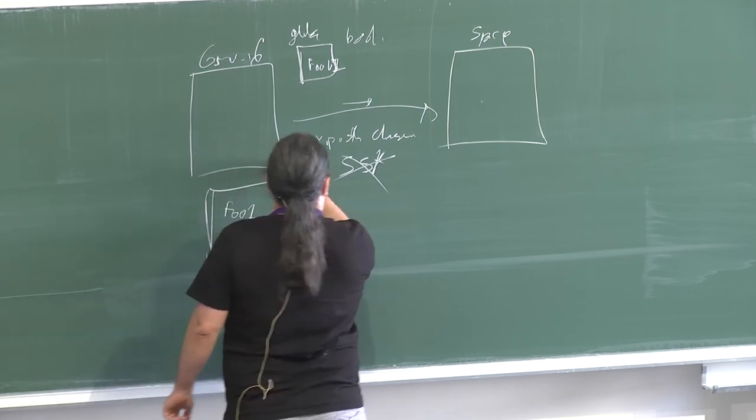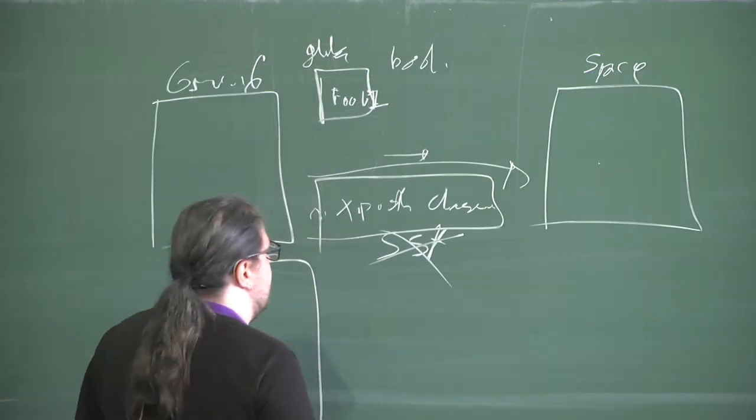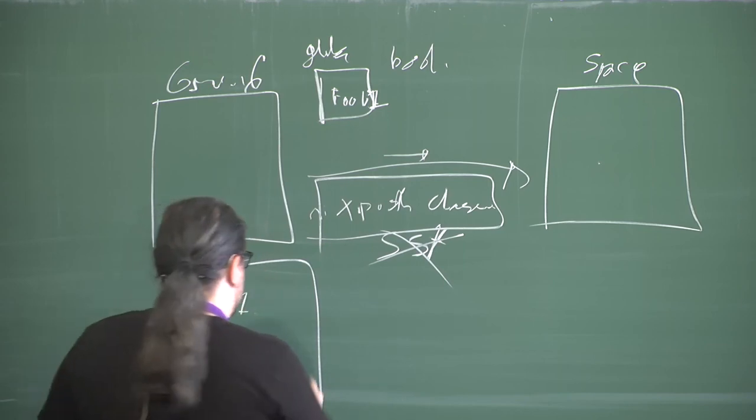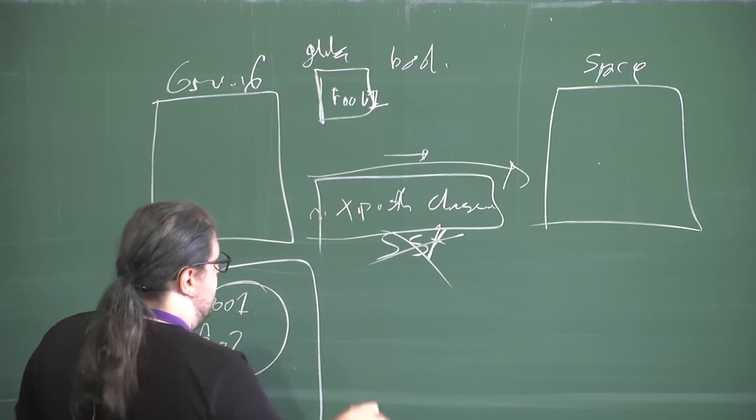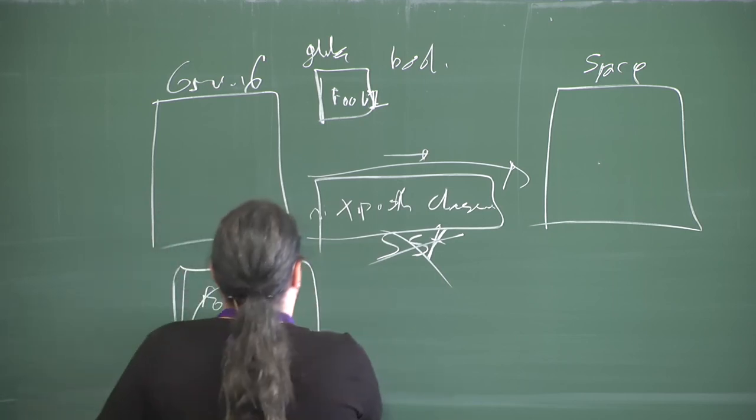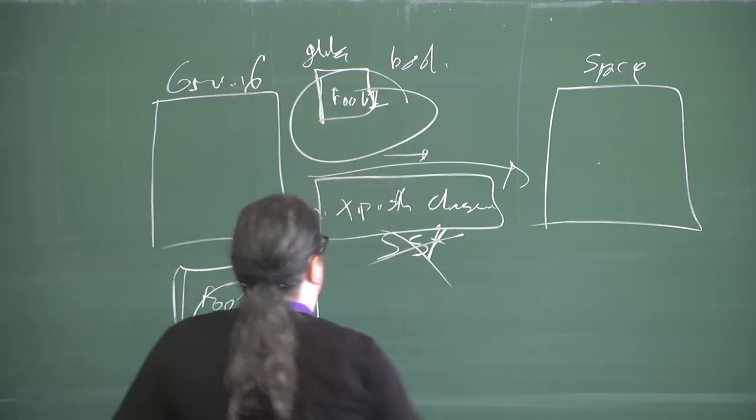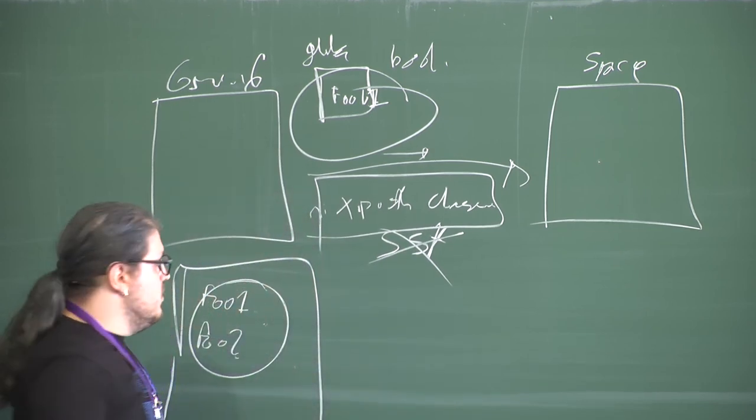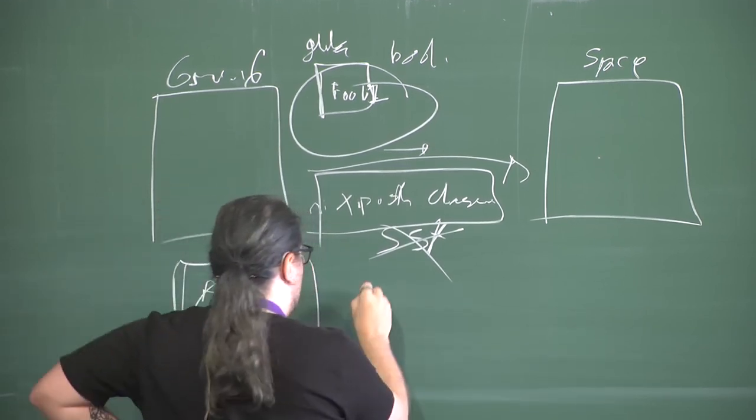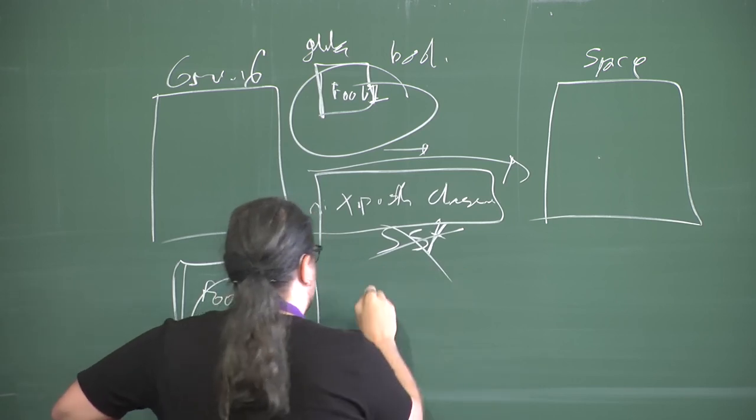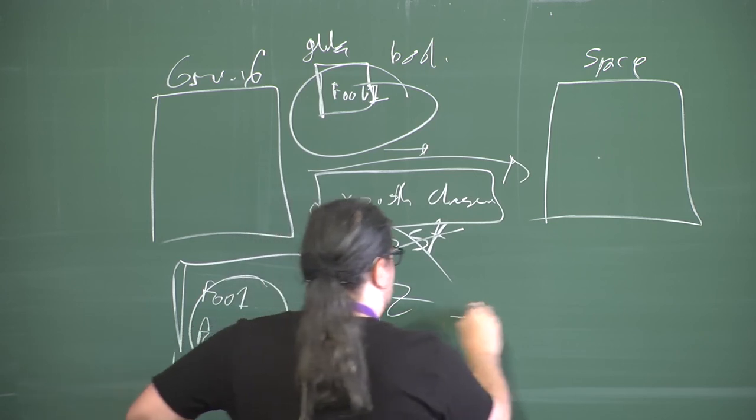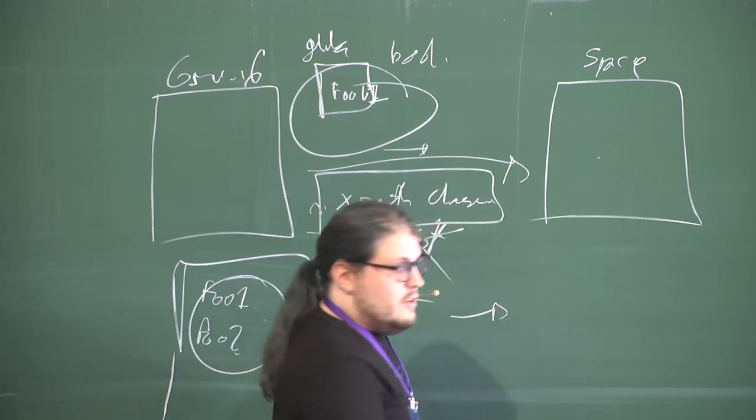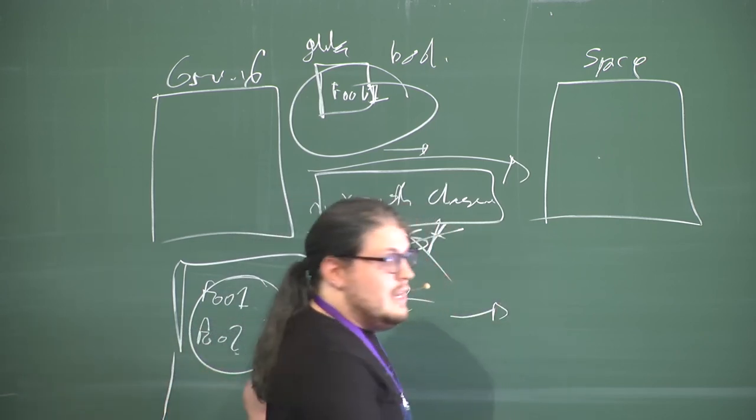Then we manually do what Nix push closure does. We do a diff between the packages that I already have in space and the new packages that I'm going to deploy, just get the difference for that. Then run it through XZ or something for compressing it. Then we cry a little bit because it's still going to take many, many days.